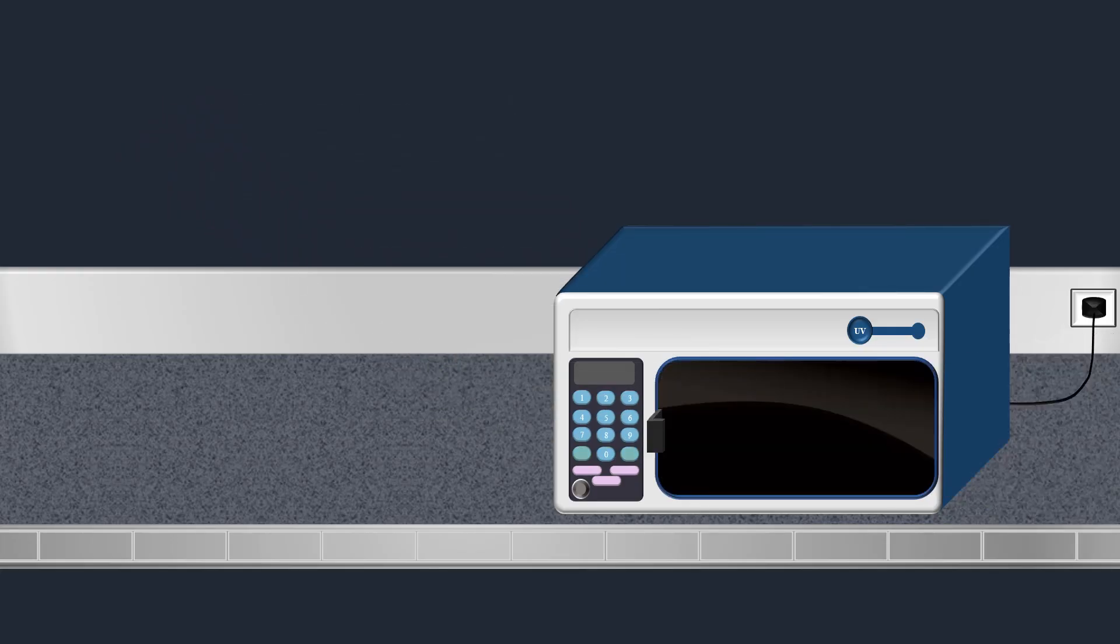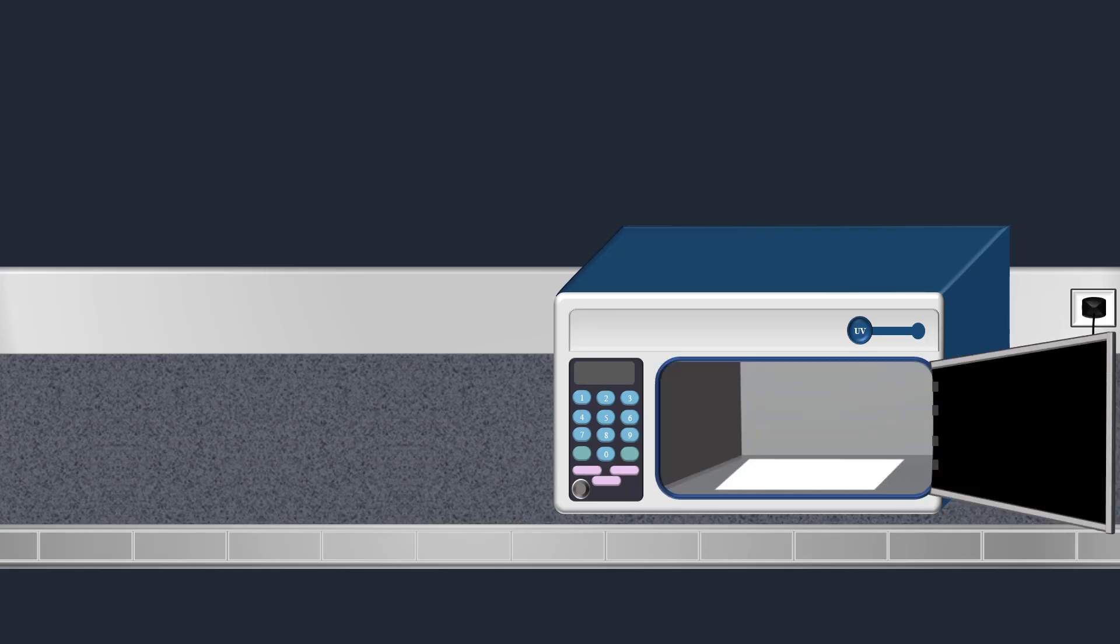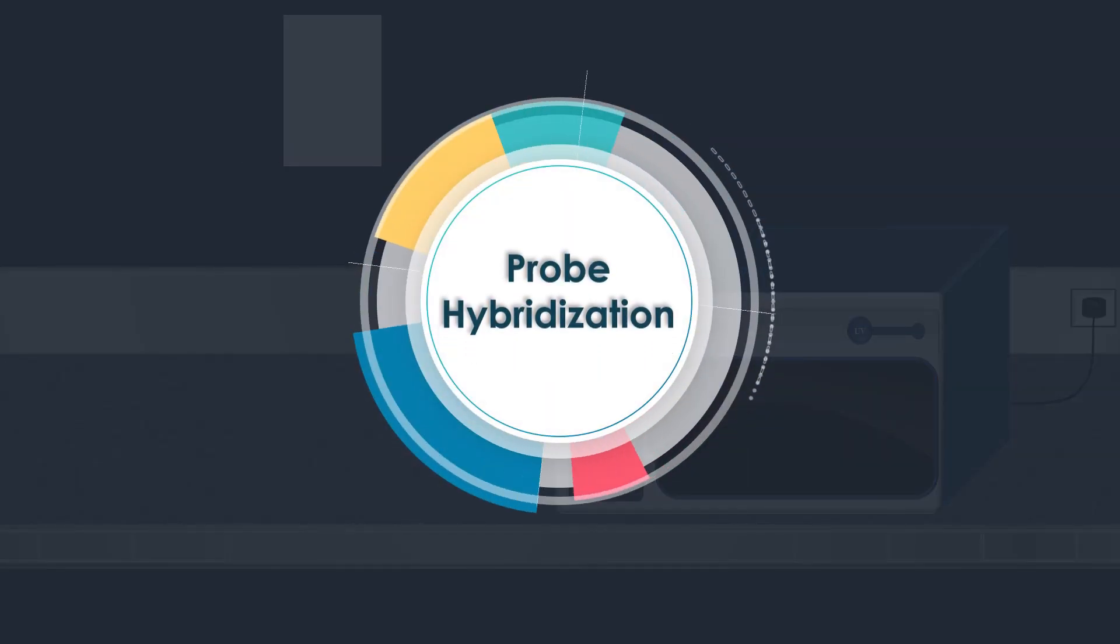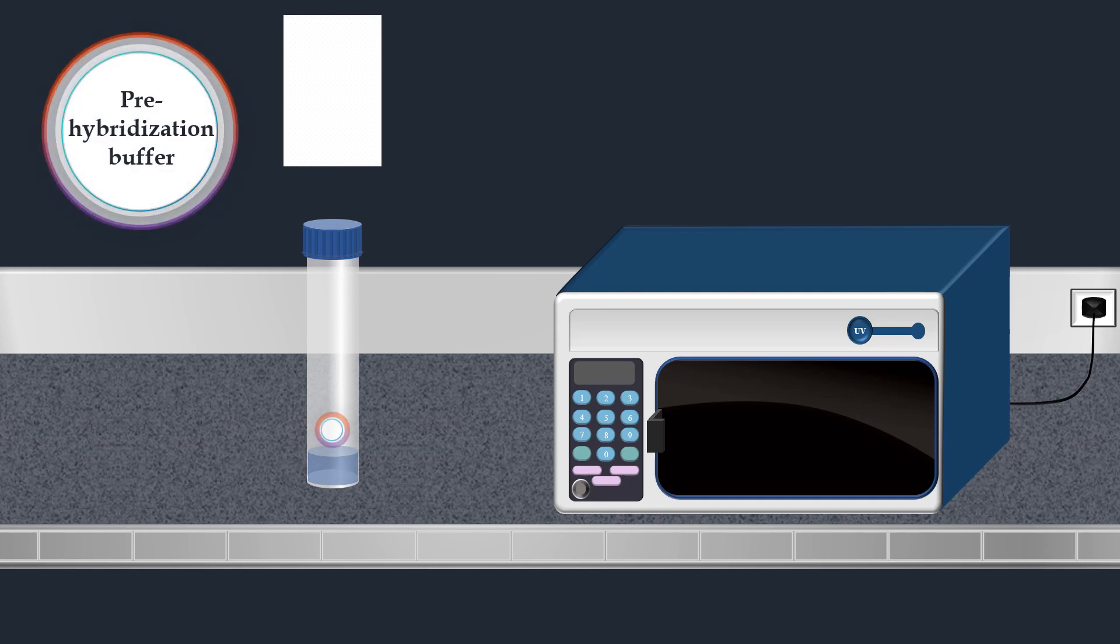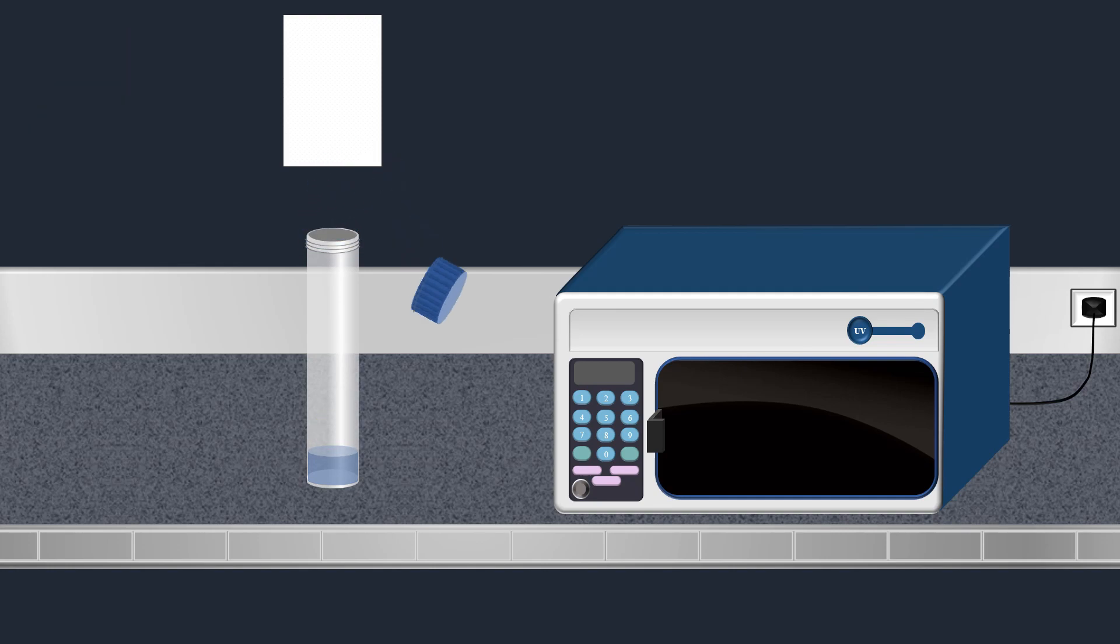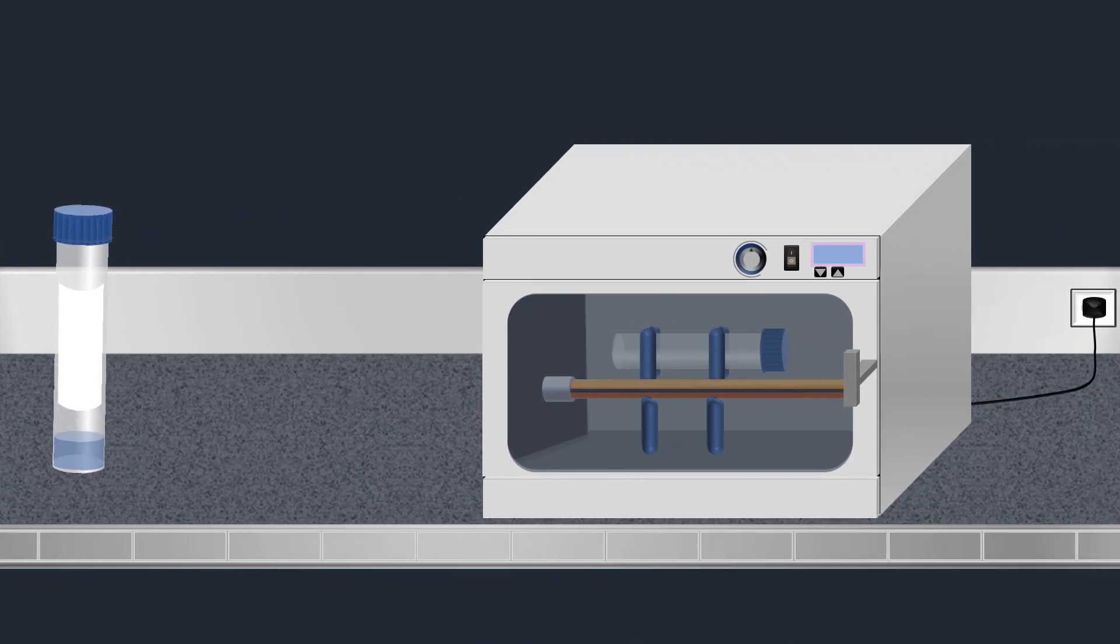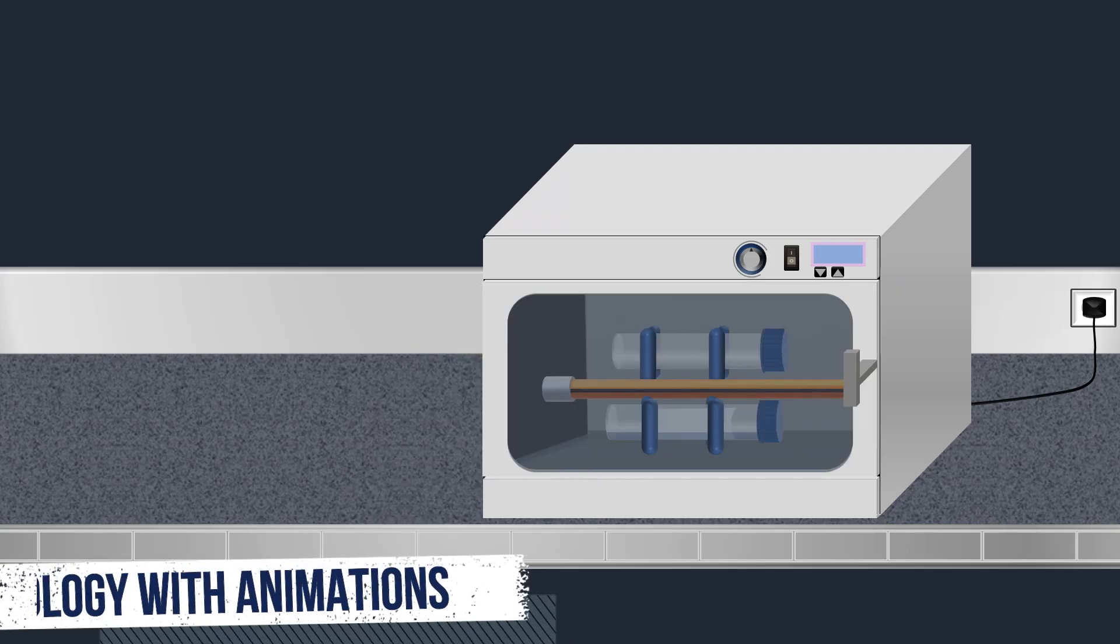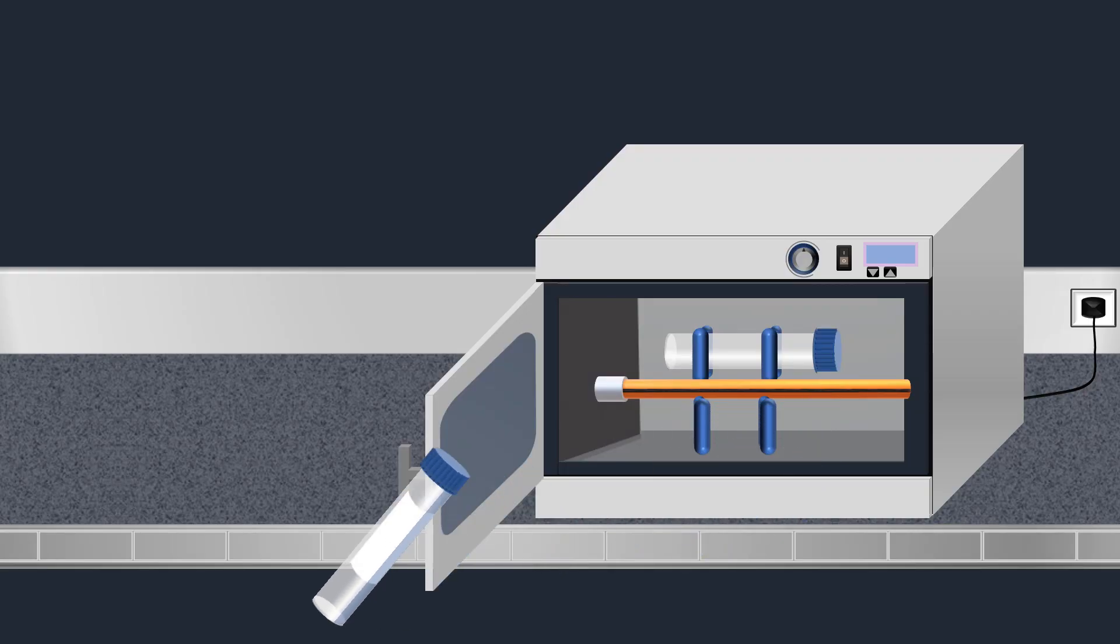After attachment of the RNA molecules to the membrane, hybridization with radio-labeled probes is performed. The membrane is placed in a bottle containing a pre-hybridization solution, which is used to reduce non-specific hybridization with the probe. Next, the bottle is incubated in a hybridization oven at 42 degrees Celsius for two hours. Once the incubation is complete, the pre-hybridization solution is removed.